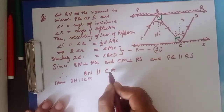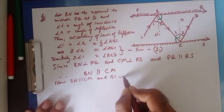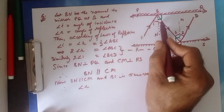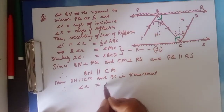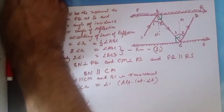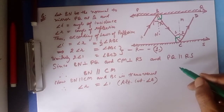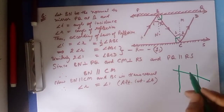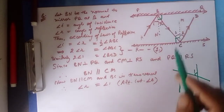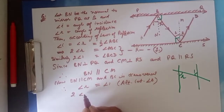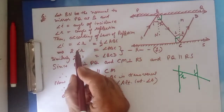Since BN is parallel to CM and BC is a transversal, the alternate interior angles are equal. Therefore angle R is equal to angle 1. See — BN is here, CM is here, they are parallel and BC is the transversal going across, so R will be equal to angle 1. So we have proved that angle R and angle 1 are equal, therefore their doubles will also be equal: double of R equals double of 1.